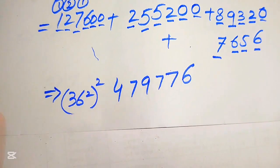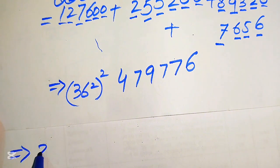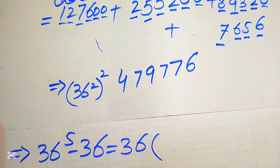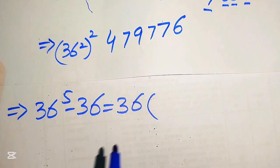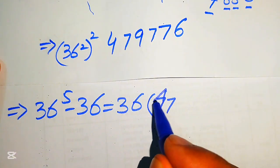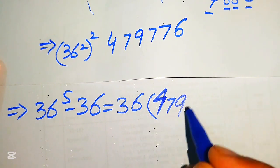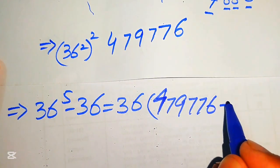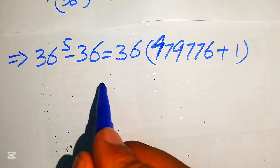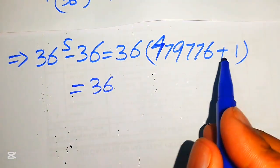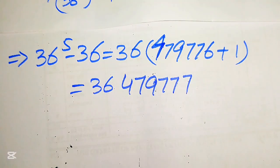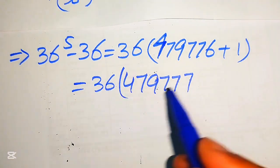So our expression 36^5 − 36 equals 36 × ((36^2)^2 + 1). Substituting 36^2 = 1296, we have (36^2)^2 = 1679616. Adding 1 gives 1679617. So the expression becomes 36 × 1679617.